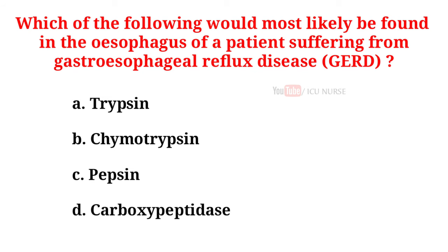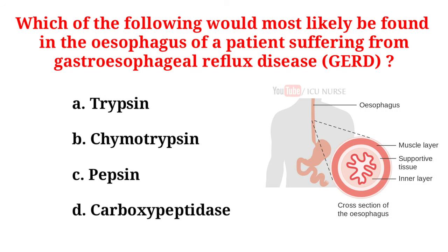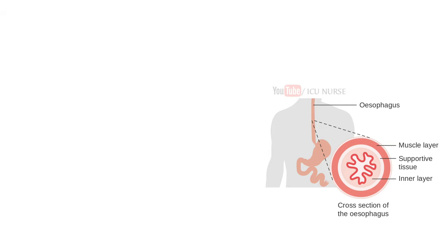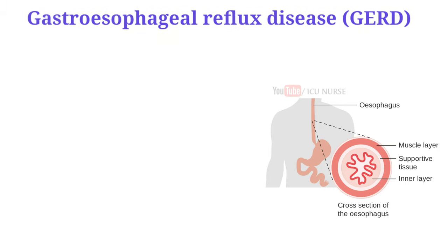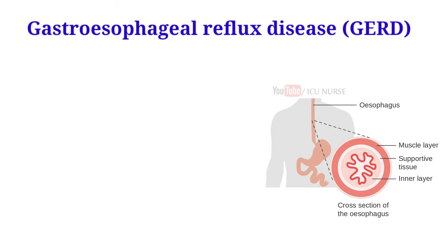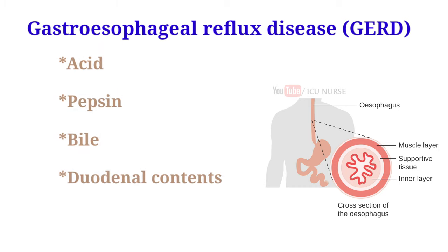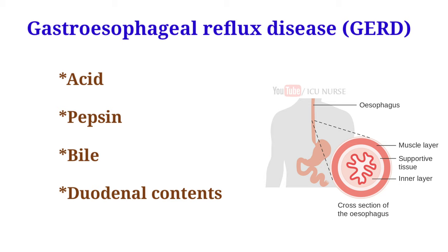Which of the following would most likely be found in the esophagus of a patient suffering from gastroesophageal reflux disease? A. Trypsin. B. Chymotrypsin. C. Pepsin. D. Carboxypeptidase. And the correct answer is C. Pepsin. The crucial role in the pathogenesis of gastroesophageal reflux disease is played by contact with the esophageal mucosa of refluxate, which can be composed of acid, pepsin, bile and duodenal contents.